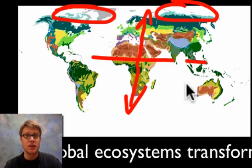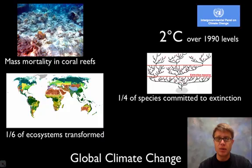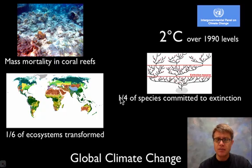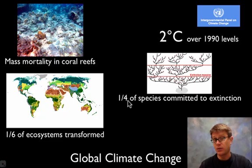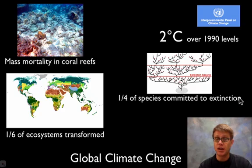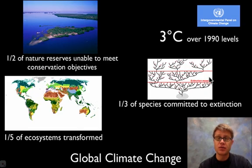It's happening so quickly that species who would normally evolve to adapt aren't able to evolve fast enough. With a two degree change over the next hundred years, we'll see mass mortality in coral reefs, a sixth of all ecosystems transformed, and a fourth of all species committed to extinction — meaning headed down a pathway toward extinction, not necessarily already extinct. A three degree change could drive a third of all species on our planet to extinction.